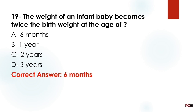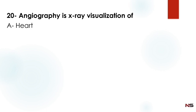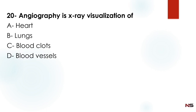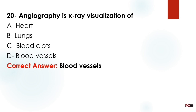The weight of an infant baby becomes twice the birth weight at the age of six months. Next question: Angiography is X-ray visualization of — Option A: heart. Option B: lungs. Option C: blood clots. Option D: blood vessels. The correct answer is Option D — blood vessels. Angiography is X-ray visualization of blood vessels.